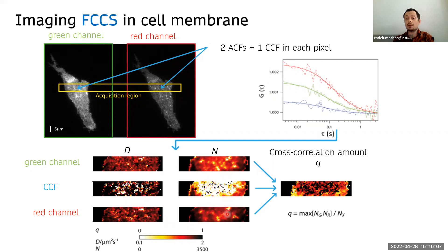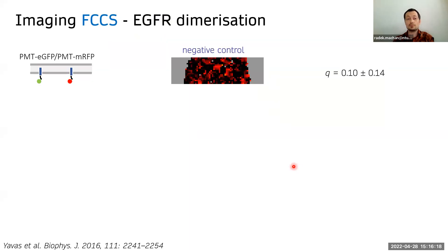particle number maps. And from the particle number maps, we can get cross correlation amount map, which is a measure of how much are the signals cross correlated in that pixel.